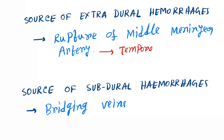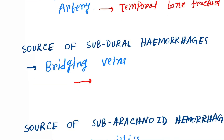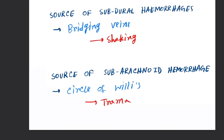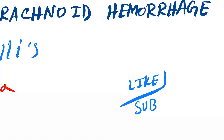Temporal bone fracture causes middle meningeal artery damage leading to extradural hemorrhage. Bridging vein damage occurs due to shaking of the head causing subdural hemorrhage. Circle of Willis damage occurs due to any injury or trauma causing subarachnoid hemorrhage. That was the lecture on intracranial hemorrhage — if you liked the video, please hit the like button and subscribe to my channel.